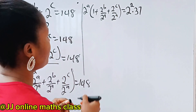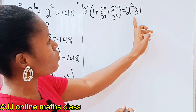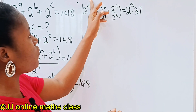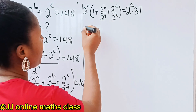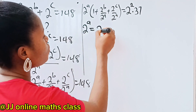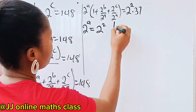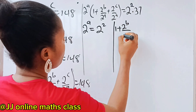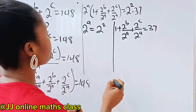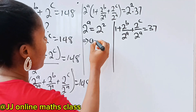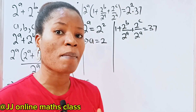Back to what we are doing on the board. We can notice that we have 2 to the power of A equal to 2 to the power of 2 multiplied by 37. Notice that 2 to the power of A is the even part and 2 to the power of 2 is even, while the bracketed part is odd and 37 is odd. So by comparison, 2 to the power of A is equal to 2 to the power of 2, meaning A equals 2. And 1 plus 2 to the power of B over 2 to the power of A plus 2 to the power of C over 2 to the power of A is equal to 37.